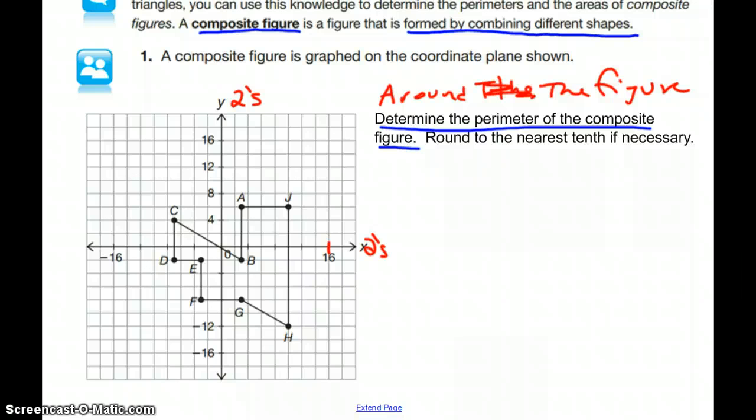However, I do have this distance of CB that's on an angle, and I also have this segment of GH that is also on an angle. So there I need to use either the distance formula or the Pythagorean theorem to find those lengths.